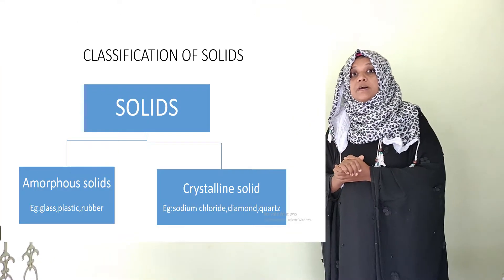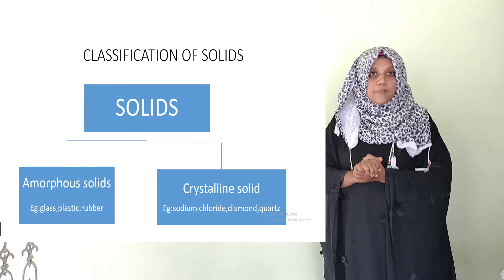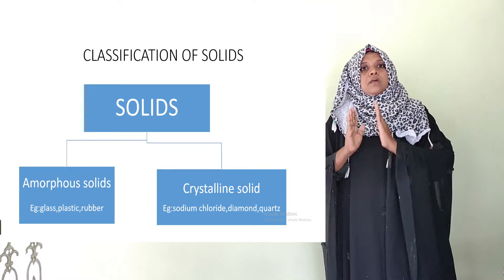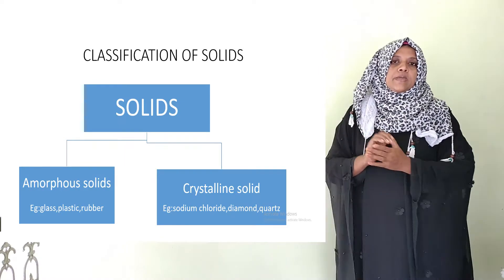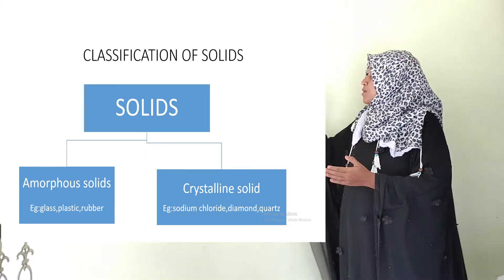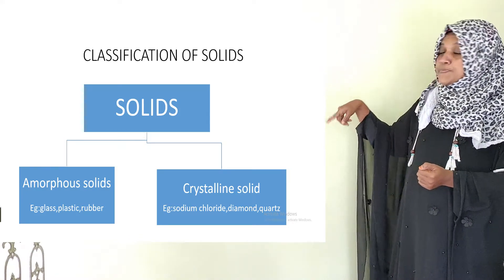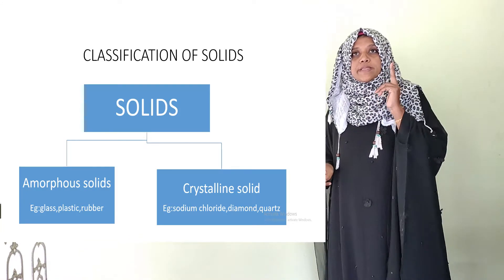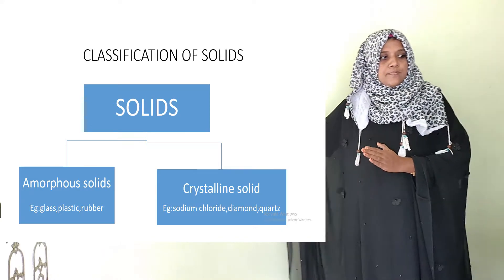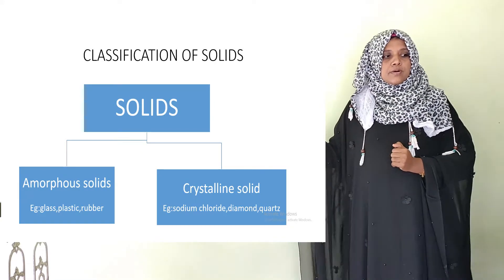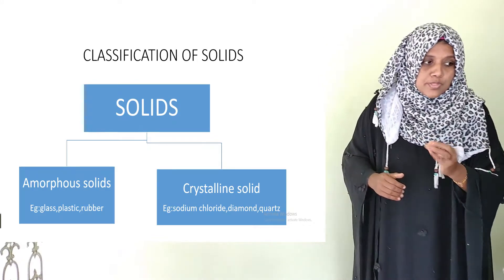Next we discuss the classification of solids. Solids can be classified into mainly two types: crystalline solids and amorphous solids. Examples of amorphous solids are glass, plastic, and rubber. Examples of crystalline solids are sodium fluoride and diamond.